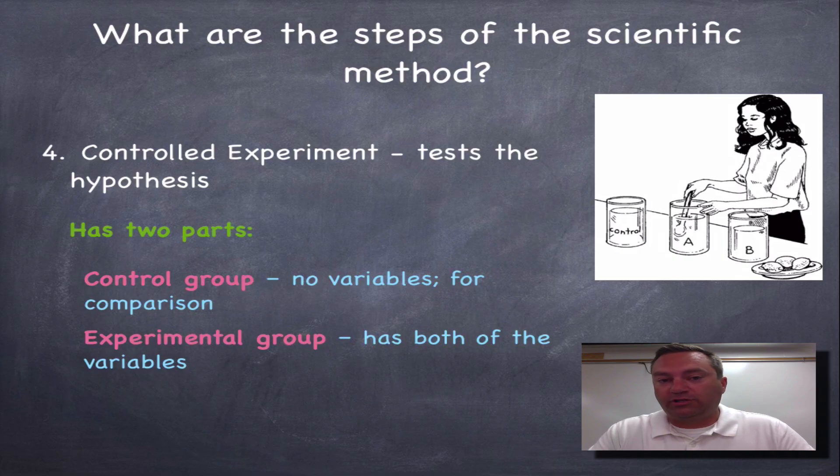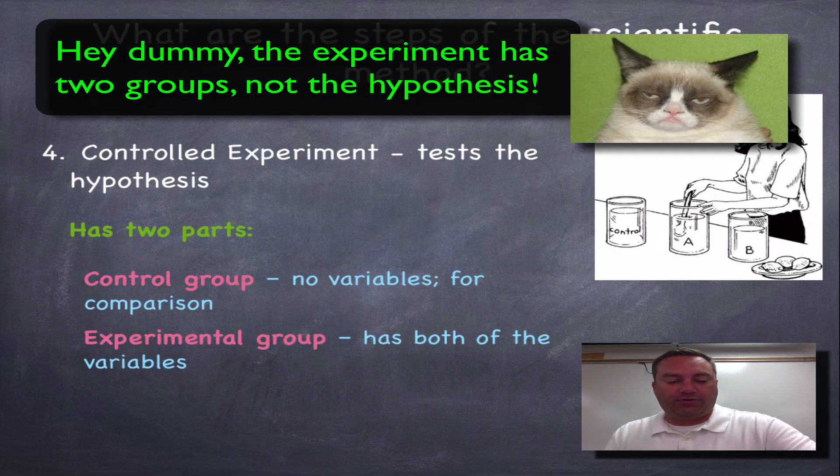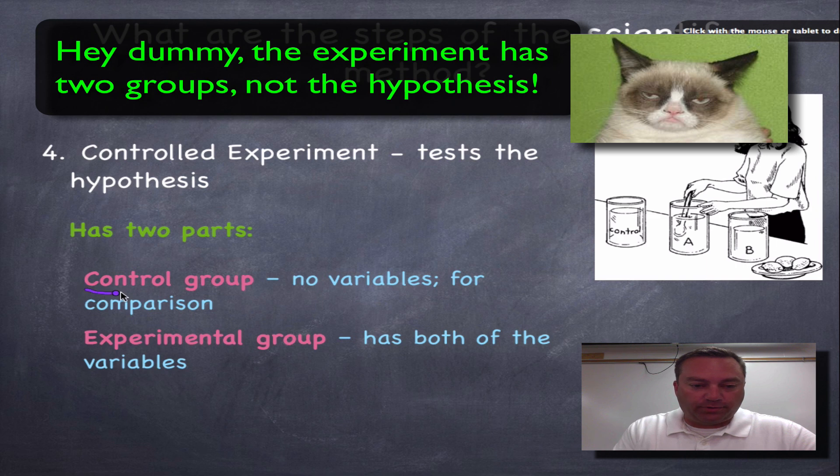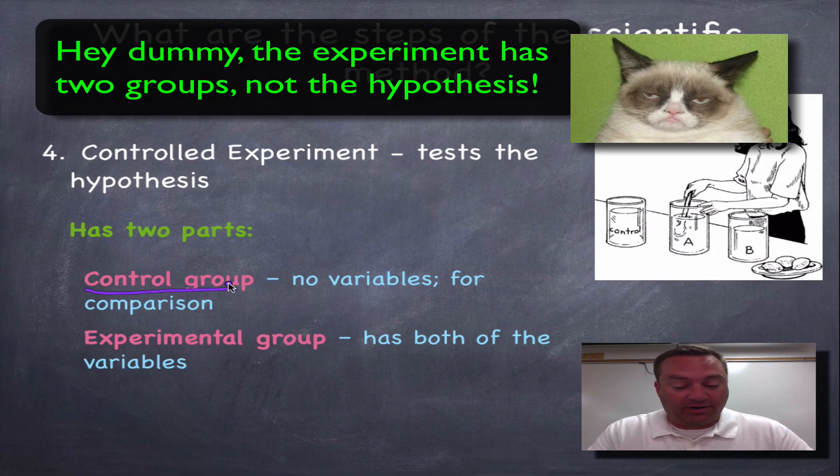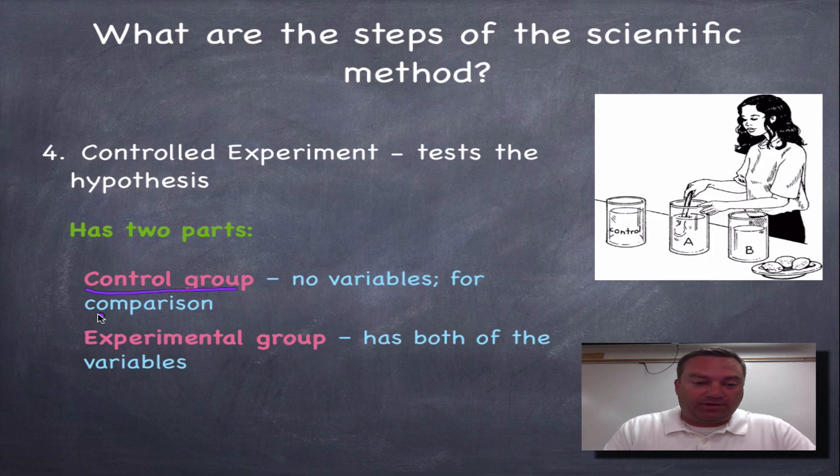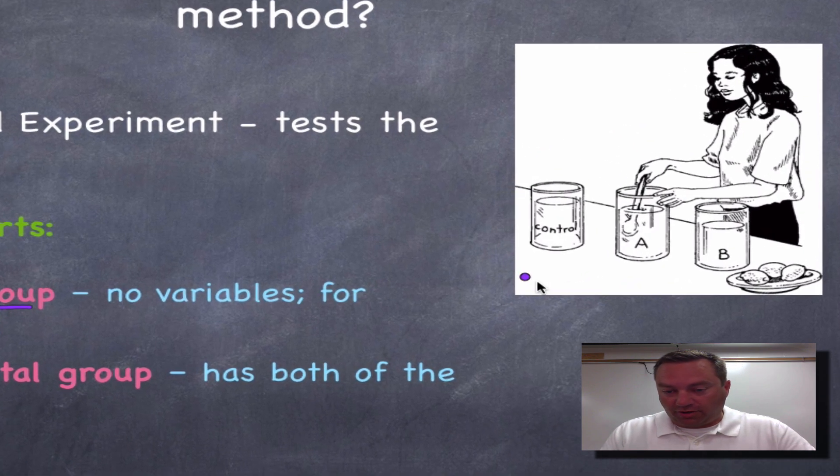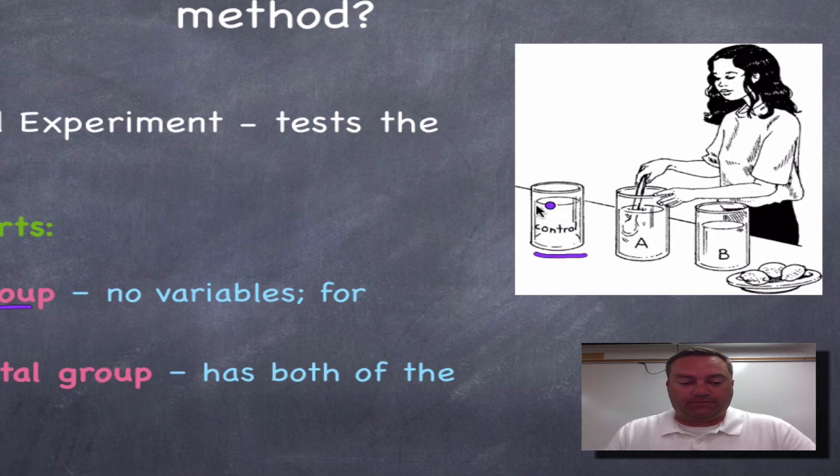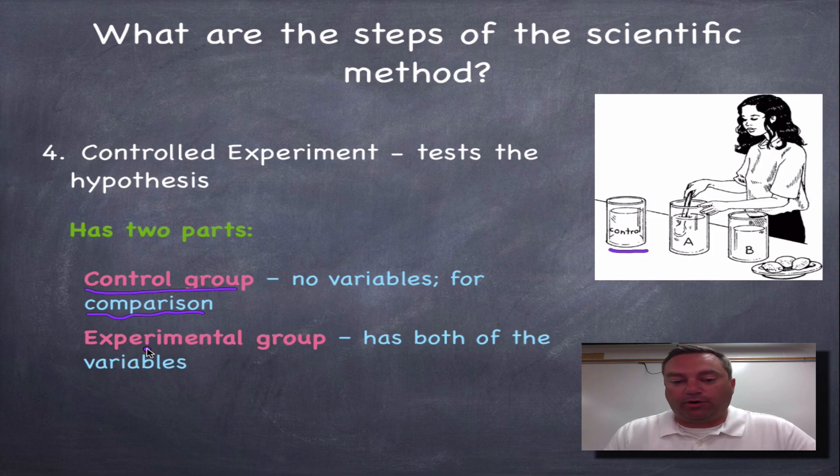So we got our great hypothesis that's written in an if-then statement and possibly an if-then because. Now we need to do a controlled experiment because this is what the test is going to be to see if our hypothesis is correct. In other words, is our prediction correct? Now, a hypothesis is going to have two different groups. The first group is called the control group. It has no variable, so it's not going to have a manipulated or responding variable. It's not going to have an independent variable or a dependent variable. It's simply going to be there for comparison. So if you look over here in this picture, here's your control group. It's got nothing being added to it.